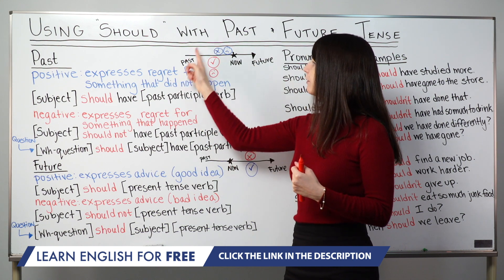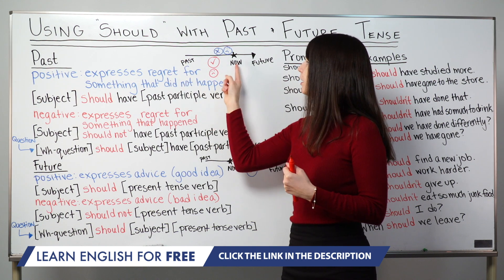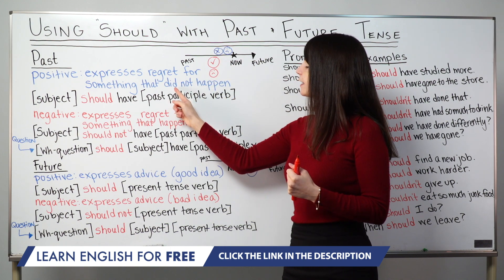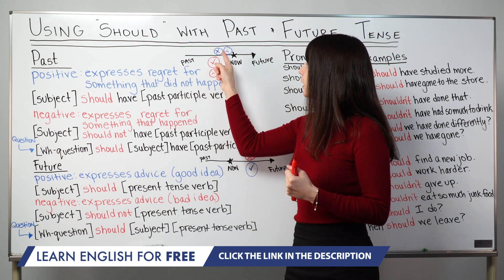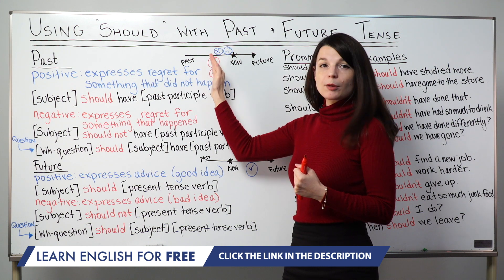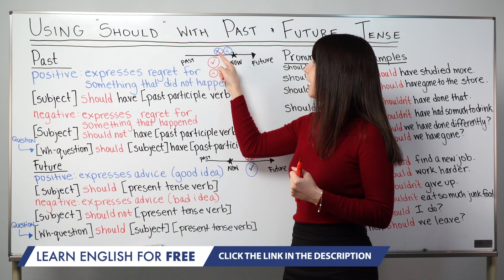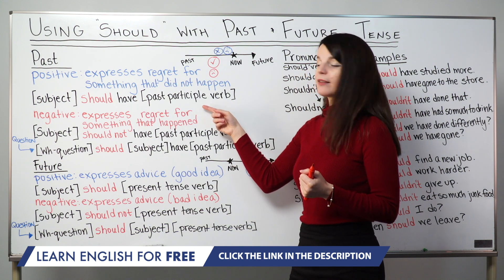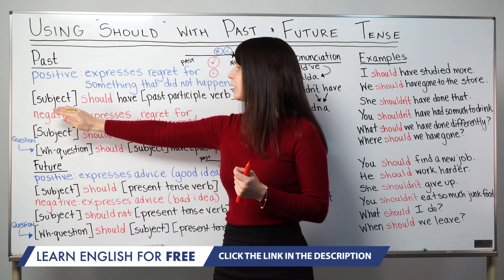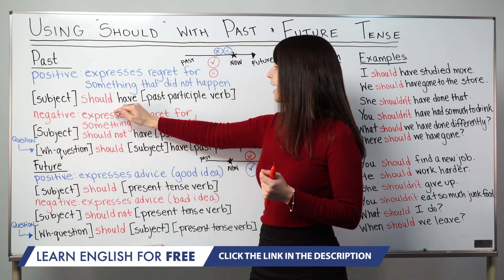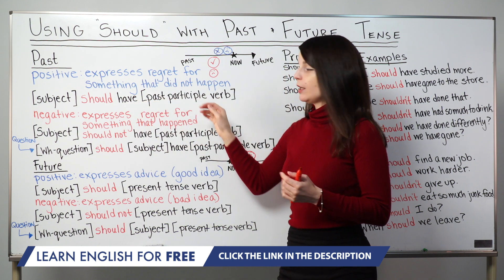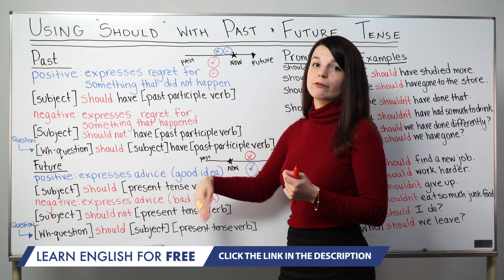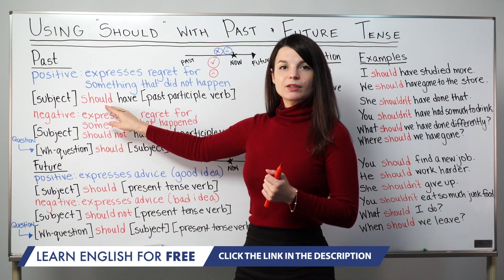To visualize this, I've created a timeline here with the past, the present — our conversation — and the future. When we make positive statements with should in the past tense, we're imagining something that did not happen before the present, and we feel sad about it. The pattern is: subject plus should plus have, then the past participle form of a verb. This is what makes it a past tense statement, quite different from future tense statements.